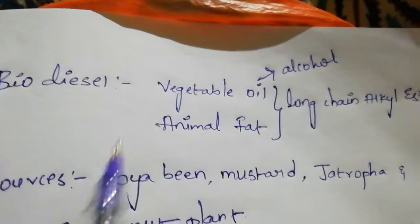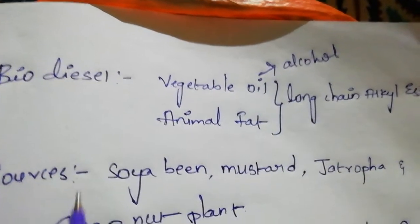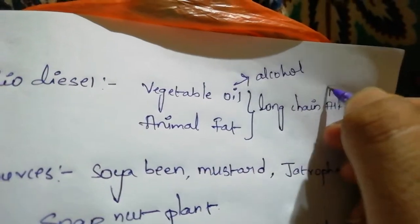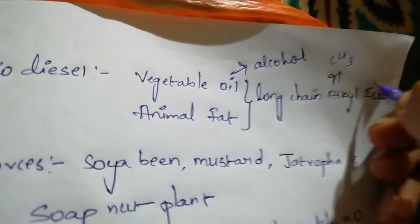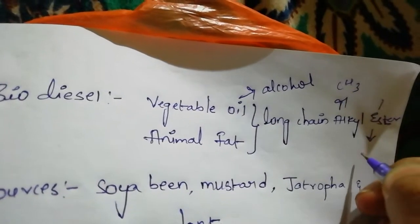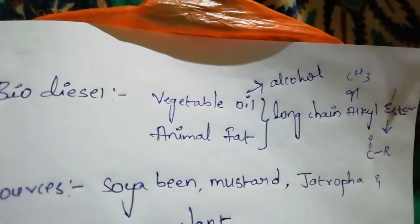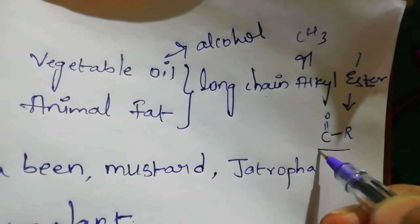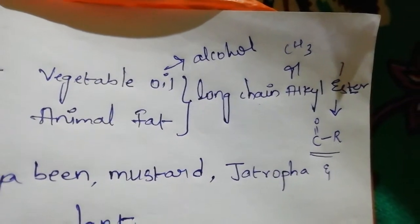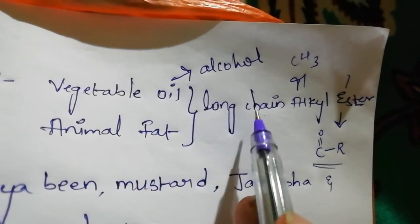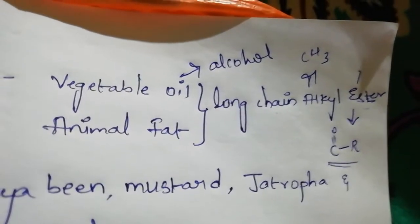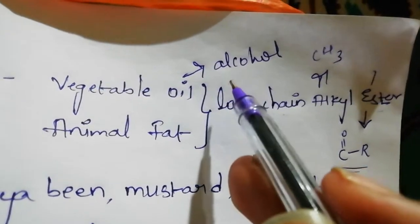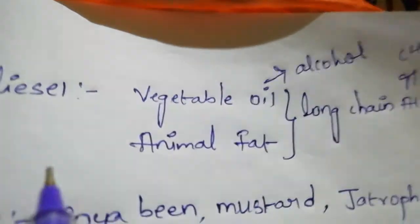Vegetable oils are long chain alkyl esters. Alkyl means the CH3 group, and ester means the C double bond O–R group. So vegetable oils are called long chain alkyl esters. Now we will write the formula of this long chain alkyl ester, react it with alcohol, and derive the biodiesel product.